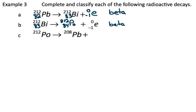And C, we have polonium 212. We know from the last example that polonium has an atomic number of 84. This decays into lead 208 and something else. Looking at the periodic table for lead's atomic number, that is 82. And in order to balance out, we need something with a mass of 4 and an atomic number of 2.